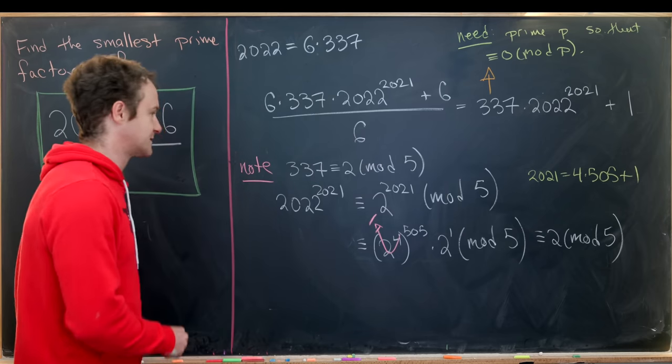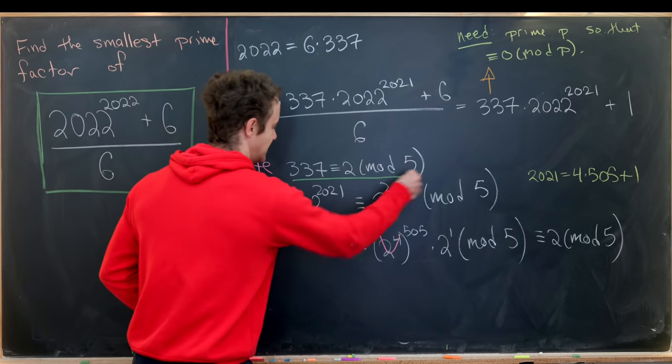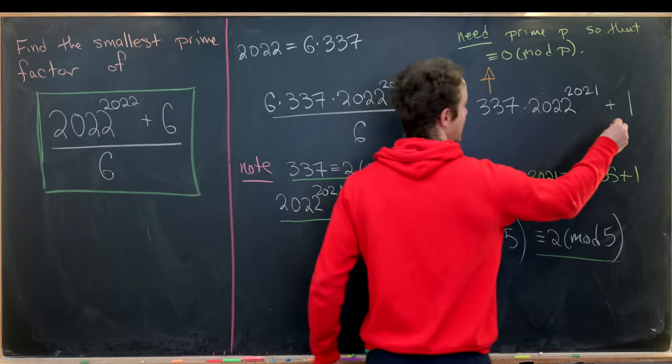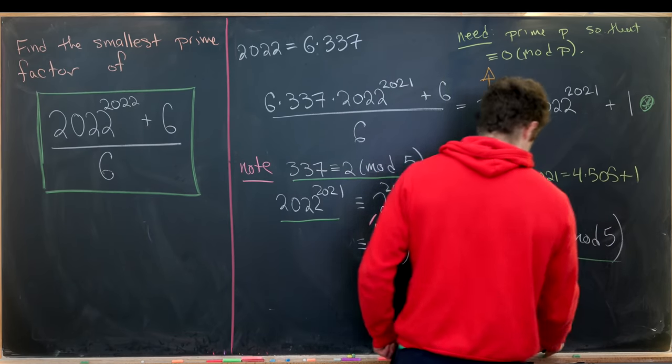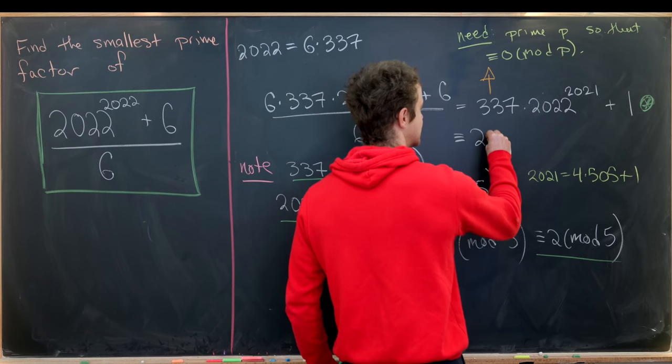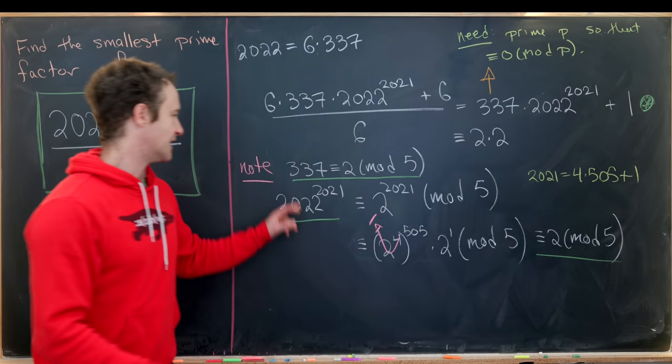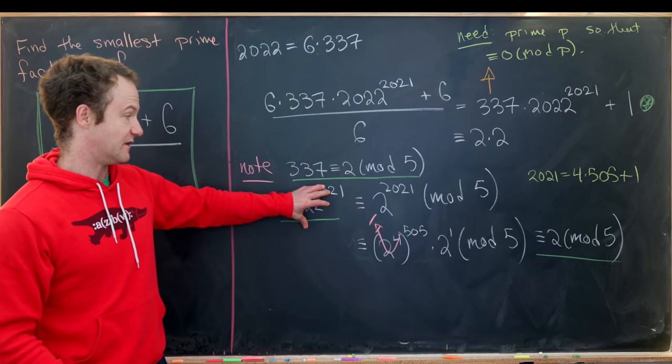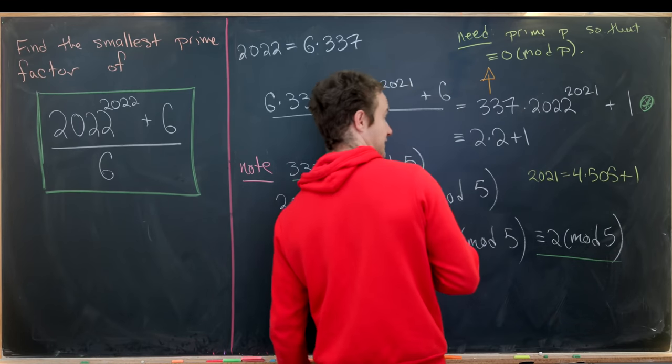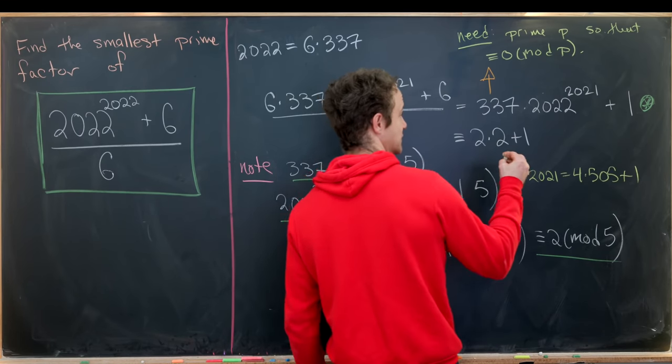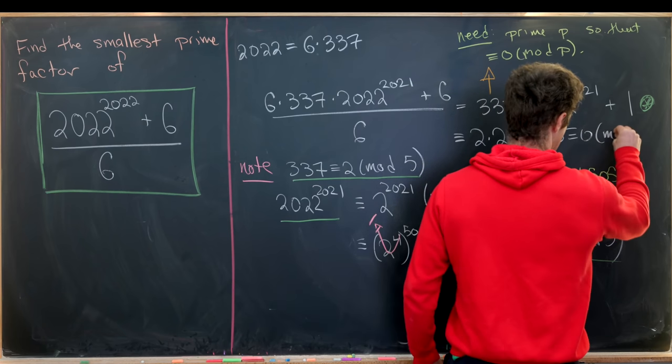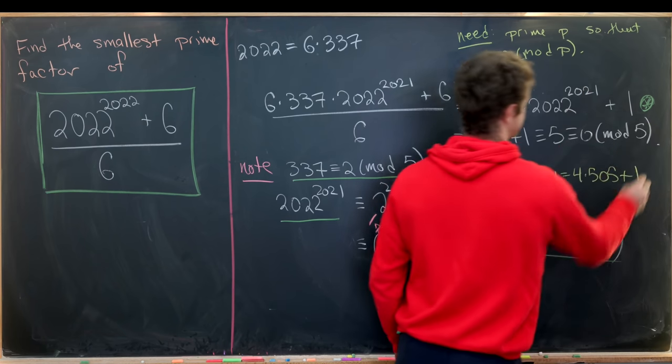Okay, nice. But now we can insert these two congruences into our number up here. So let's see what we get when we do that. So reducing this whole thing mod 5, we'll see that we get 2 times 2, that's because 337 was 2, and then this crazy exponent thing was also 2 plus 1 mod 5. But 2 times 2 is 4 plus 1 is 5 mod 5, but that is 0 modulo 5.